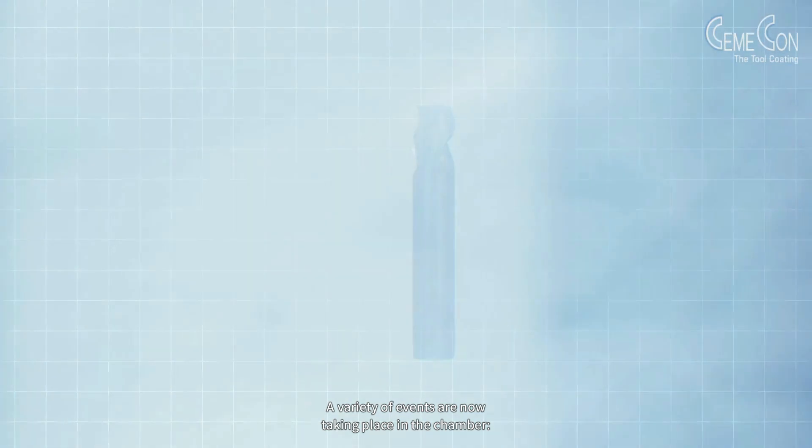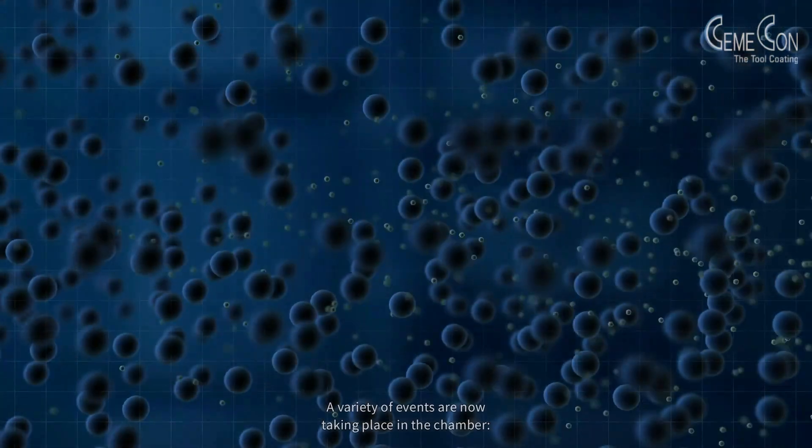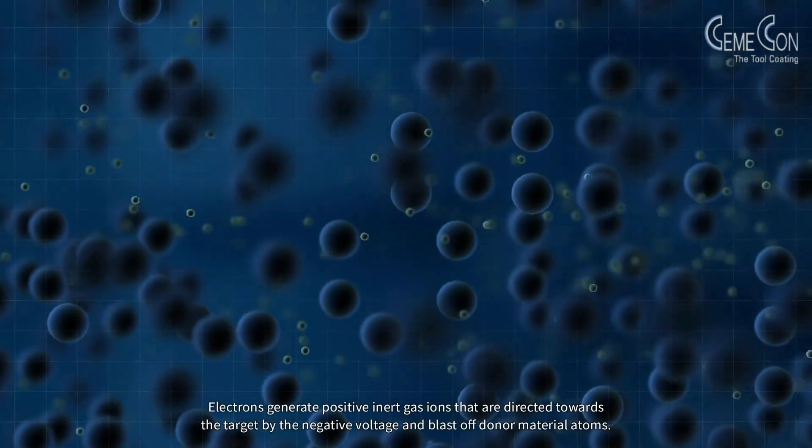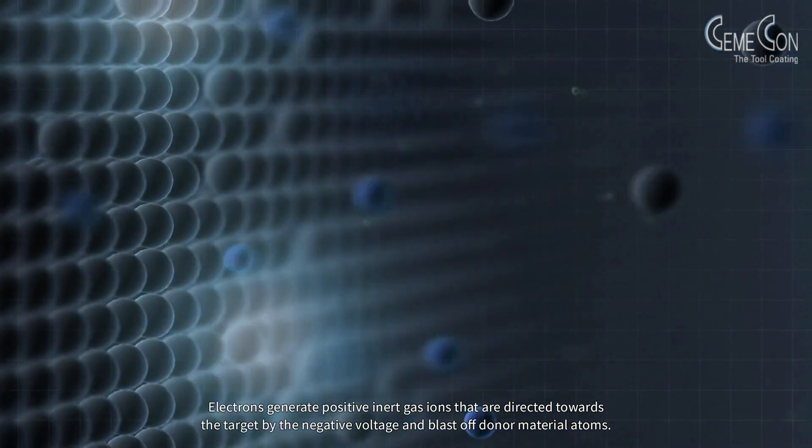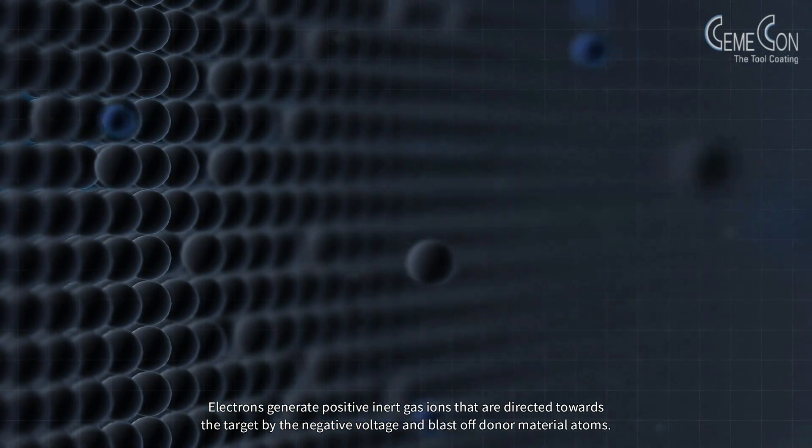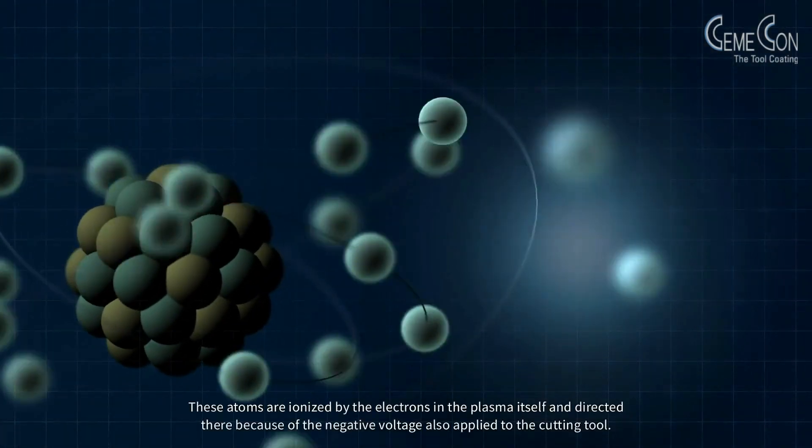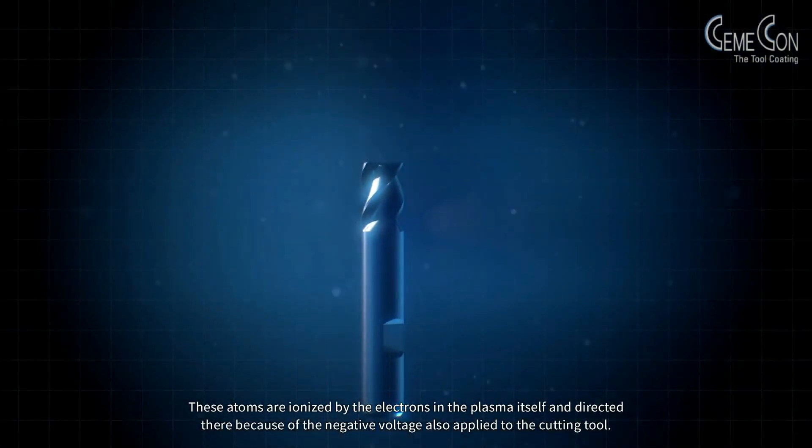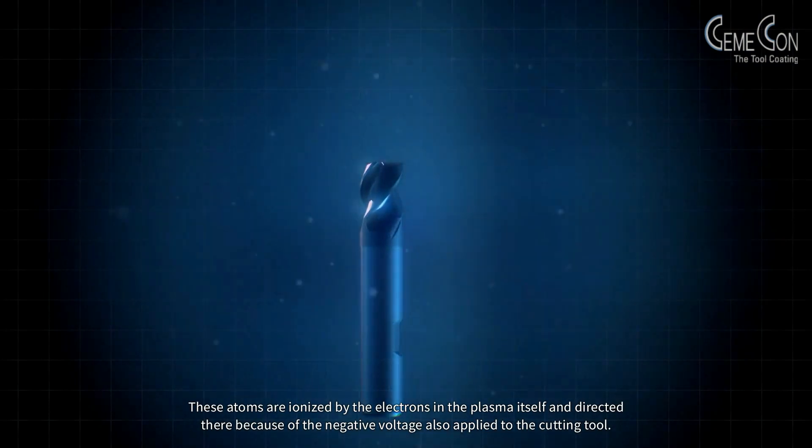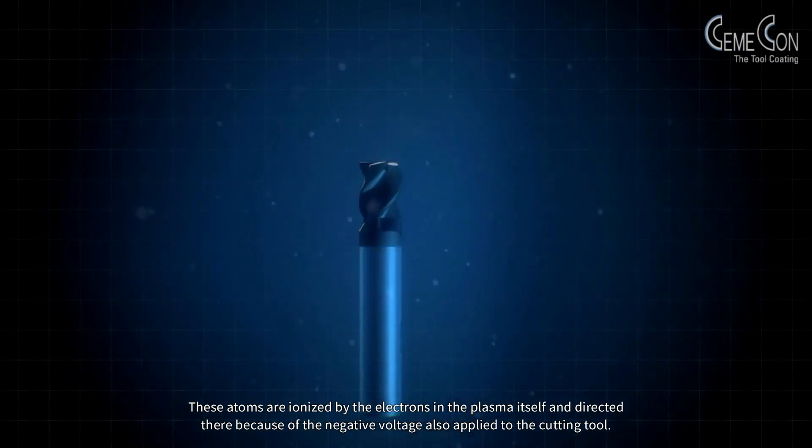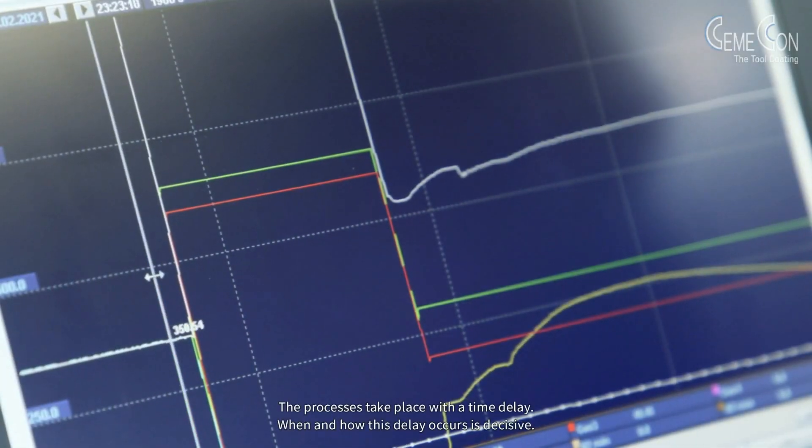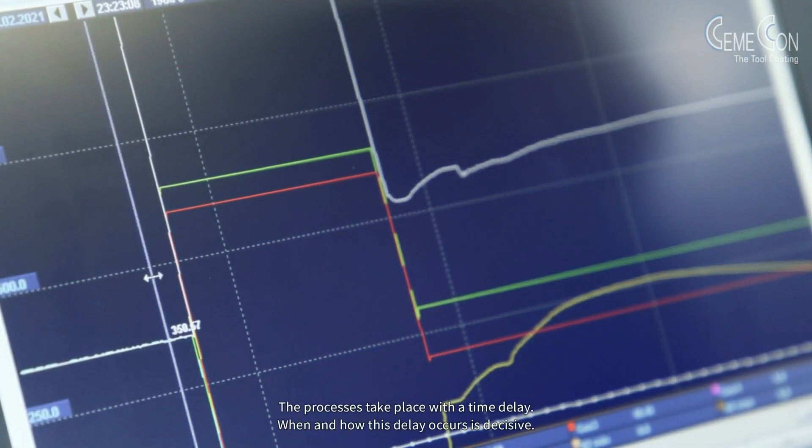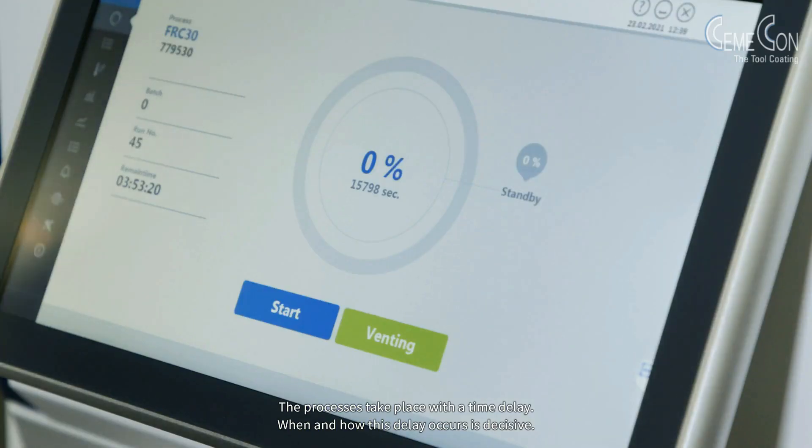A variety of events are now taking place in the chamber. Electrons generate positive inert gas ions that are directed towards the target by the negative voltage and blast off donor material atoms. These atoms are ionized by the electrons in the plasma itself and directed there because of the negative voltage also applied to the cutting tool. The processes take place with a time delay. When and how this delay occurs is decisive.